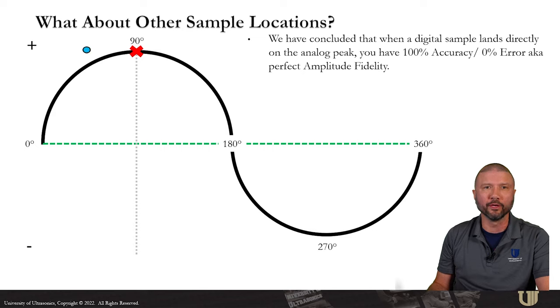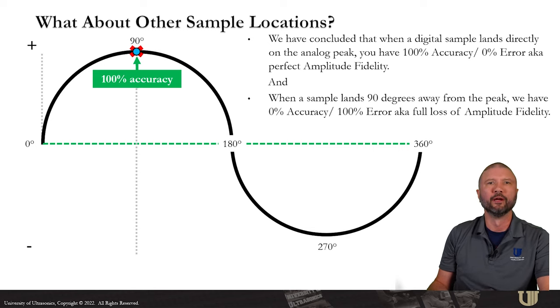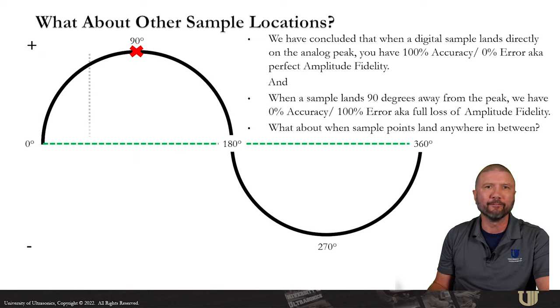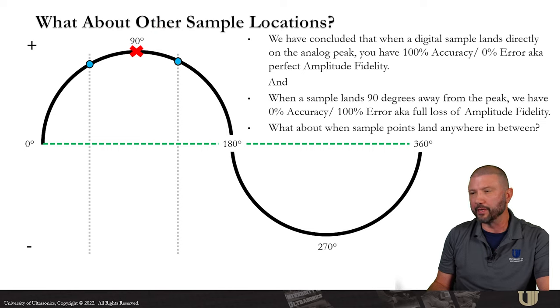We have concluded that when a digital sample lands directly on the analog peak, you have 100% accuracy and zero percent error, AKA perfect amplitude fidelity. And when a sample lands 90 degrees away from the peak, you have zero percent accuracy and a hundred percent error, AKA a full loss of amplitude fidelity. But what about when sample points land anywhere in between? Now we're getting somewhere.